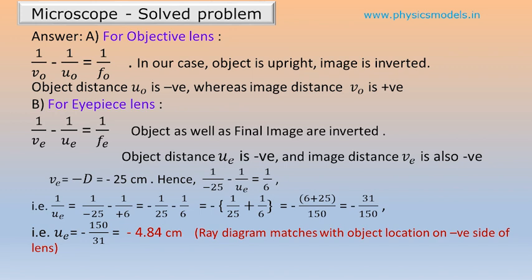Therefore, plugging in into the equation, we will get UE as minus 4.84 centimeters. So, if the inverted image is formed at this distance, then only we will get the final image at a distance D.